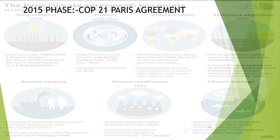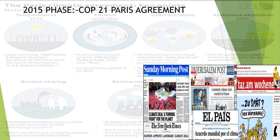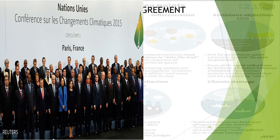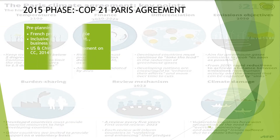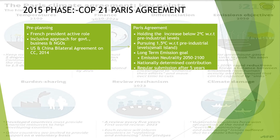The Paris Agreement happened in 2015 and was considered a complete success, as seen from various media articles. It was attended by all world leaders, and that was a major reason for its success. In the pre-planning phase, the French President took an active role, including people from various strata of society — government, businesses, and NGOs. The Paris Agreement was also helped by the US-China bilateral agreement signed in 2014, which aggressively pursued climate change action.